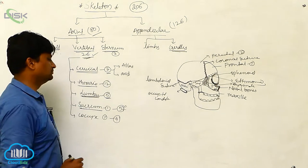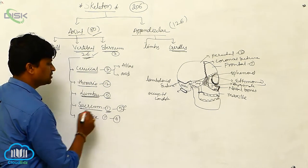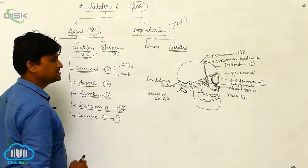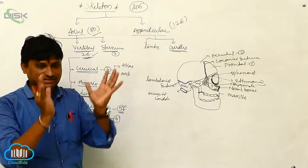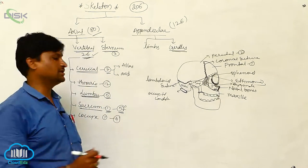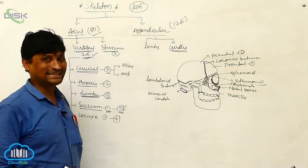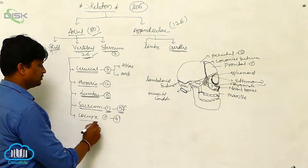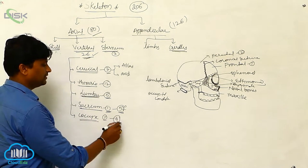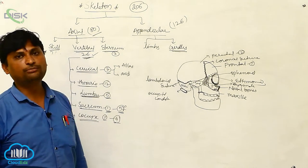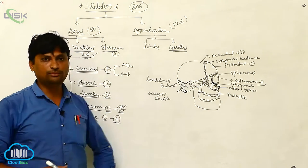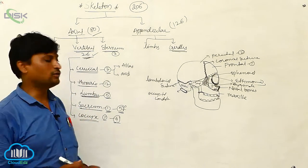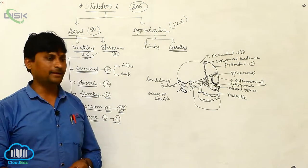Next is the sacrum. Although it appears as one bone, it is formed by the fusion of five bones into a triangular shape — we call this the sacrum. The last part is the coccyx, formed by four coccygeal bones fused together, forming the tip, called the coccyx.